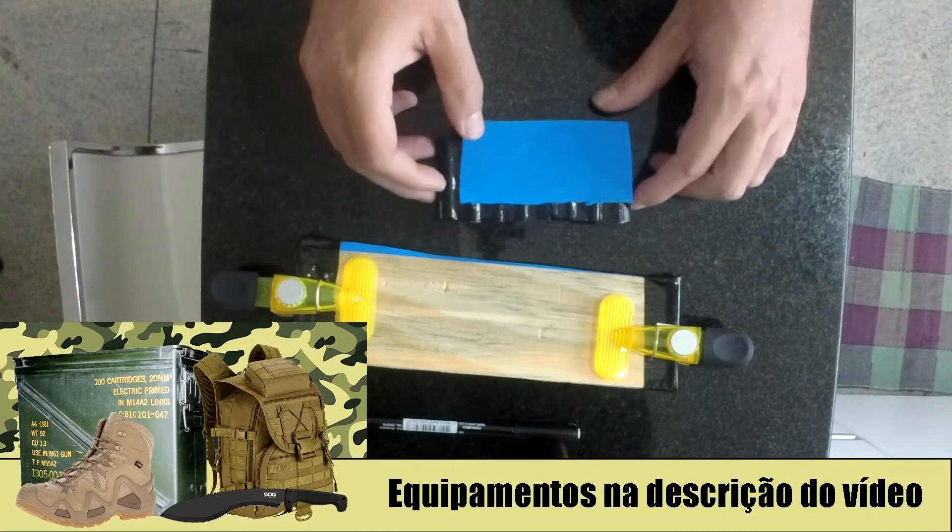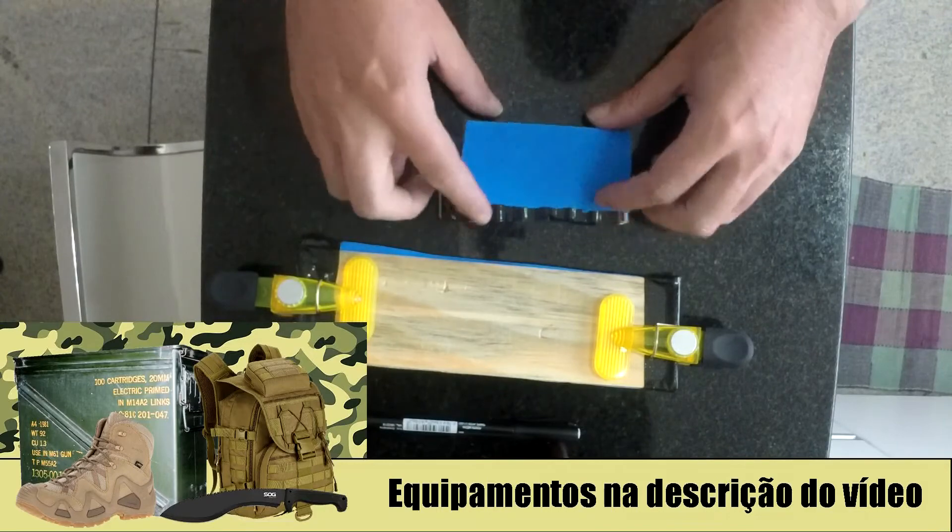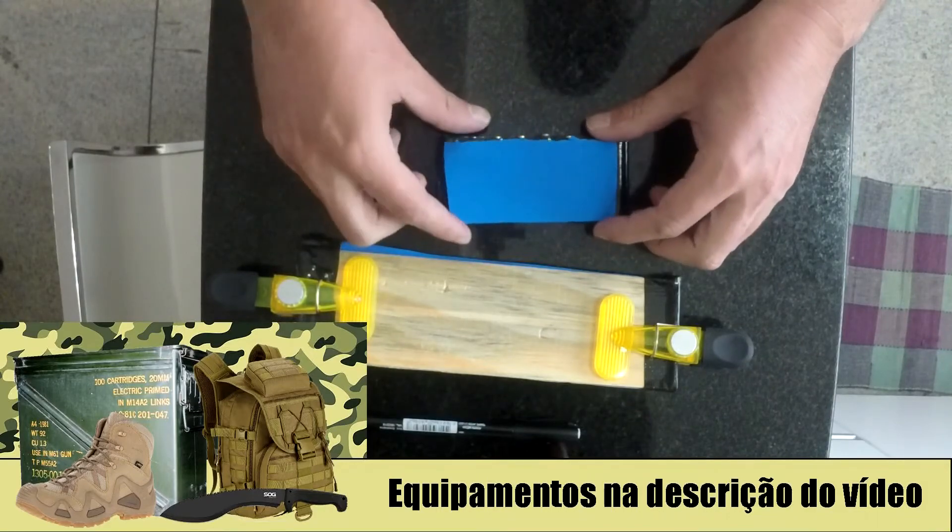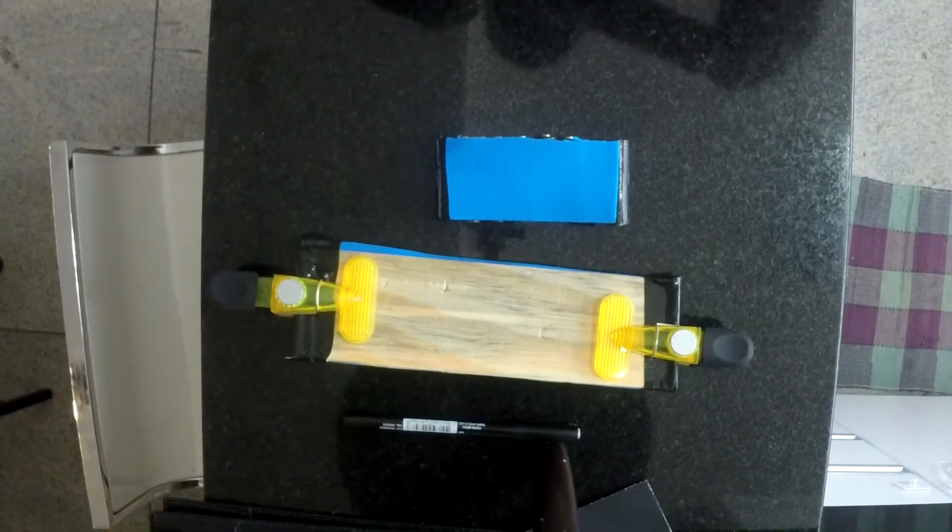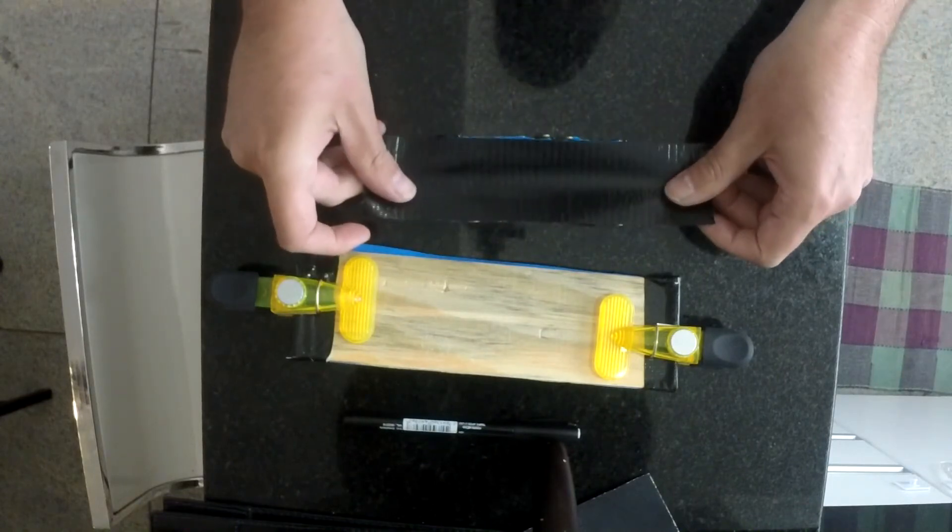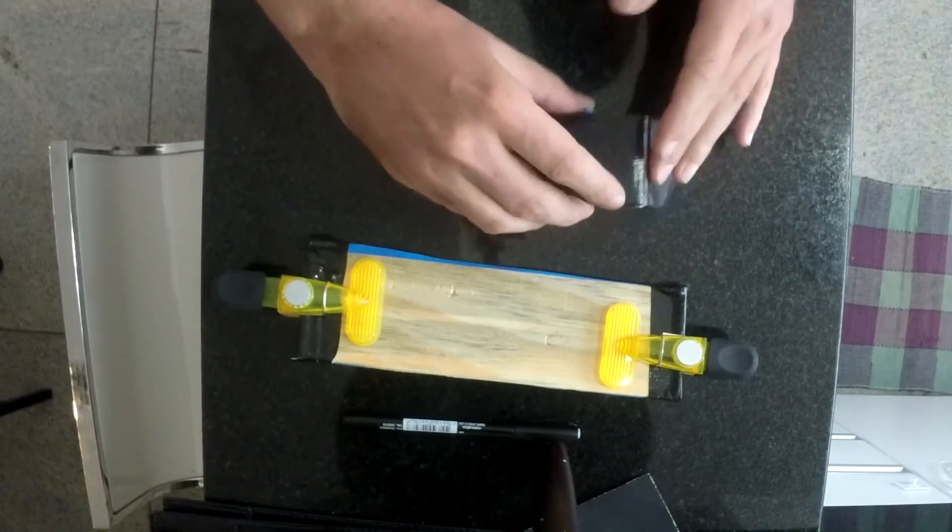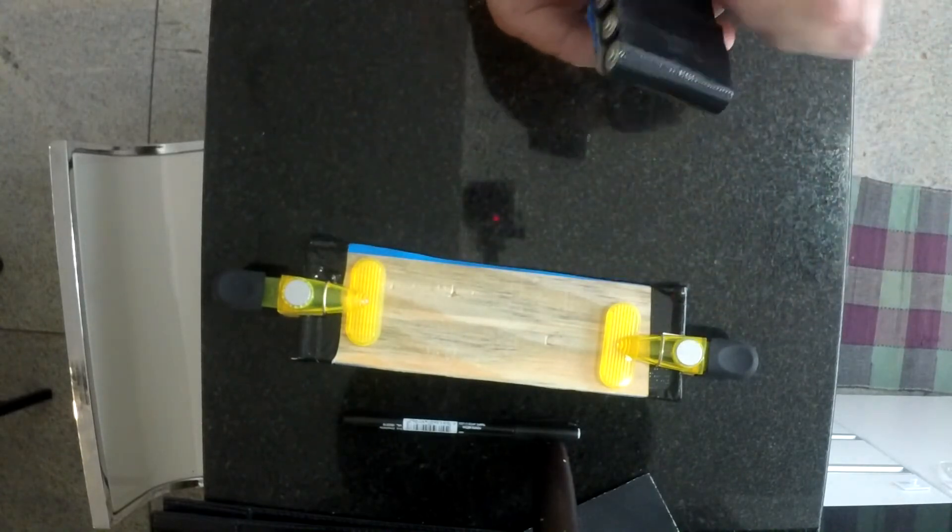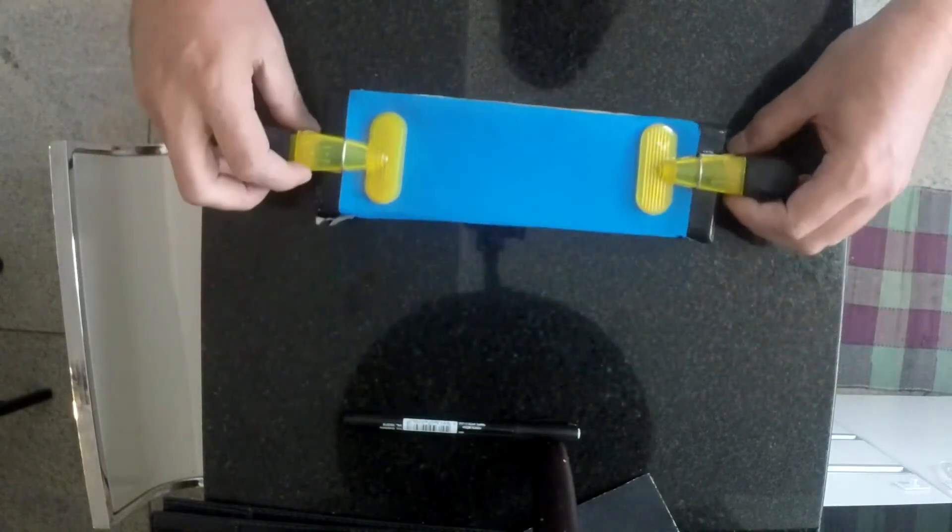No caso, faltou poucos milímetros. Então, o que eu fiz? Aproveitei para colocar mais uma camadinha de EVA por cima. Foi até bom que ajudou a endireitar as pilhas, a colocar elas mais presas na marra de duct tape. E serviu muito bem para fazer o suporte do meu suporte para a afiação.